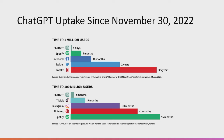When we compare this to other social media platforms — Spotify, Facebook, Twitter, and Netflix — these all took five months to 3.5 years to reach a million users. ChatGPT only took two months to reach 100 million users, compared to TikTok at nine months and Spotify at 55 months.